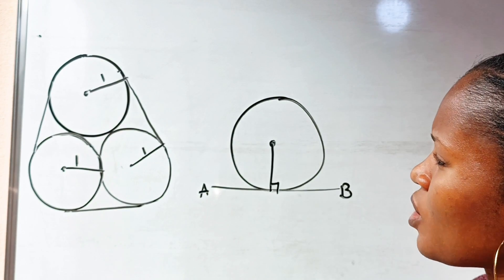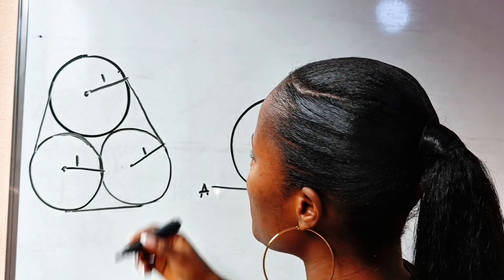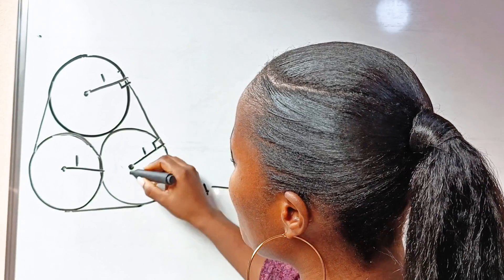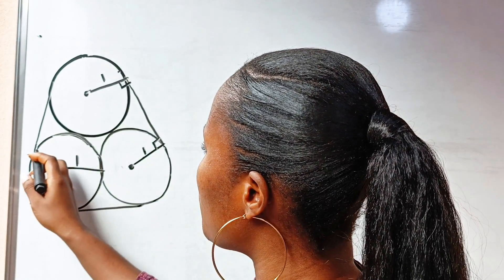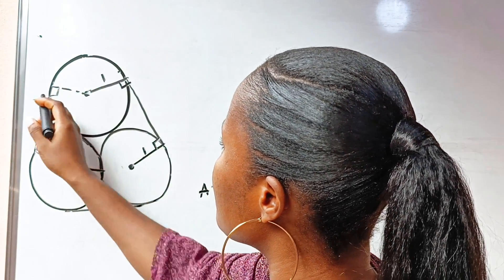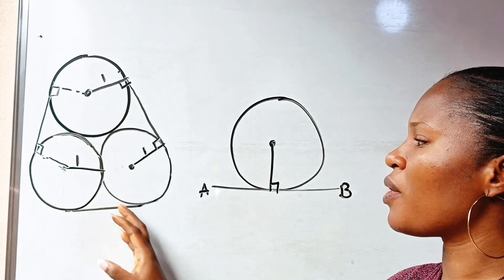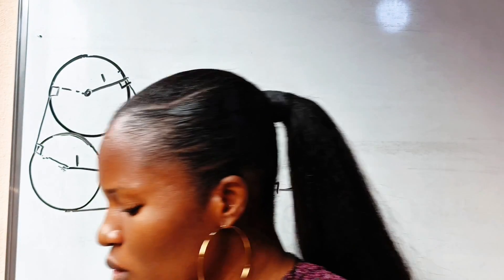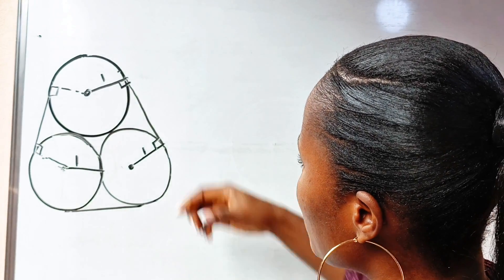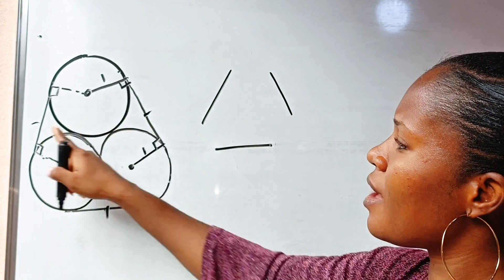Coming back to the main drawing: this straight line is a tangent, this one is a tangent, and this one is a tangent. So from each center to its point of contact we have 90 degrees. The band consists of two types of lines: the first type is the straight lines — there are three of them — and the second type is the curved arcs.